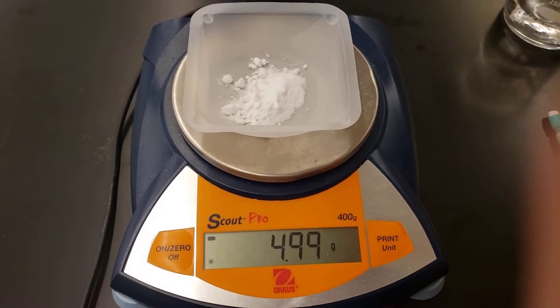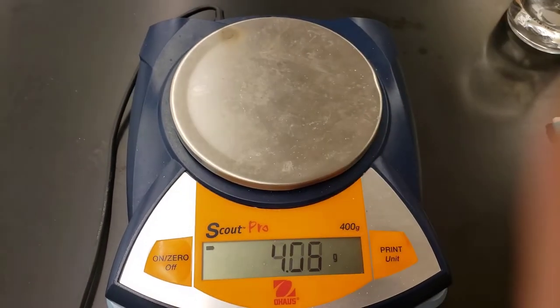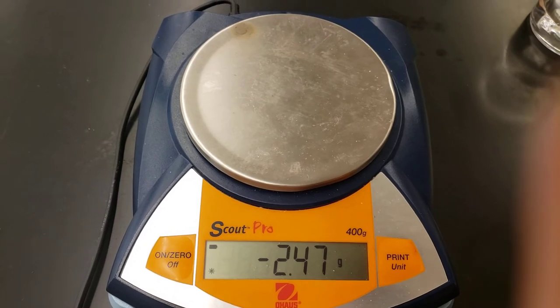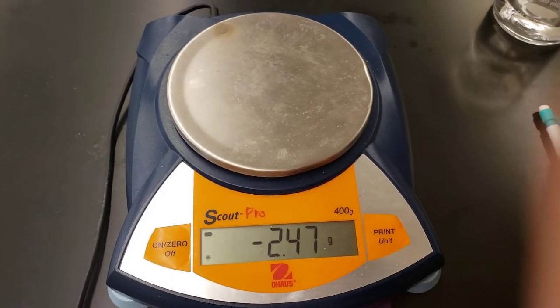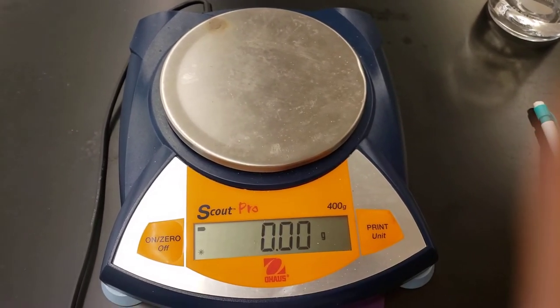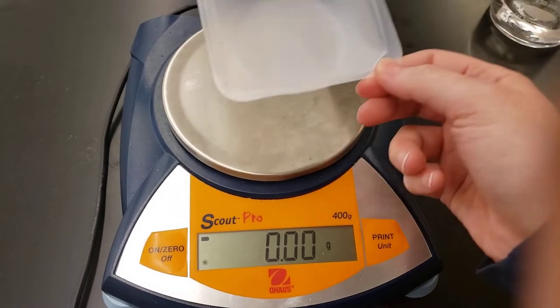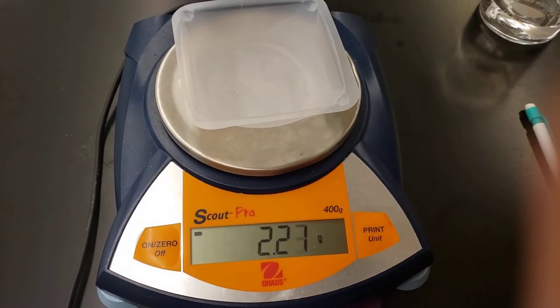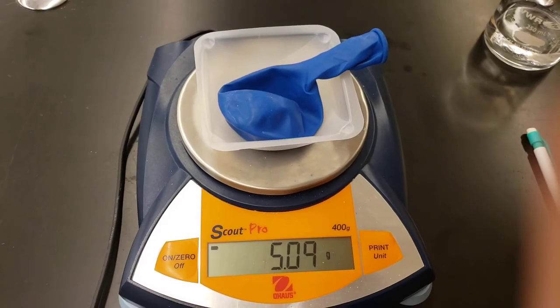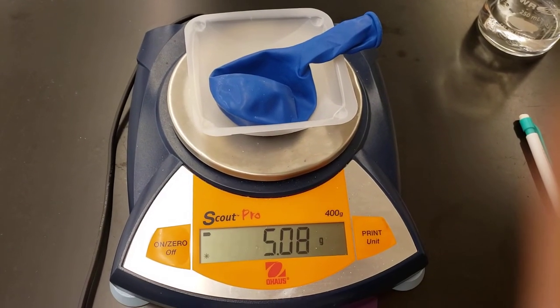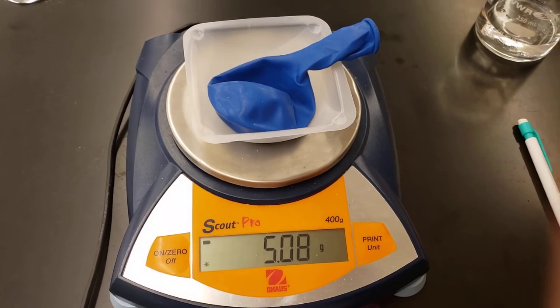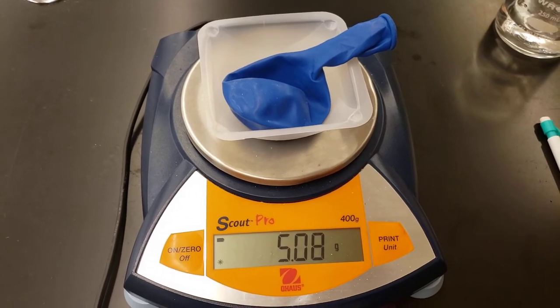The last thing we need to do before we get started is we're going to put our baking soda to the side. Then we are going to hit our zero button, get it back to zero. We're going to put our weigh boat and one balloon into the weigh boat and we are going to record that mass on our lab sheet.